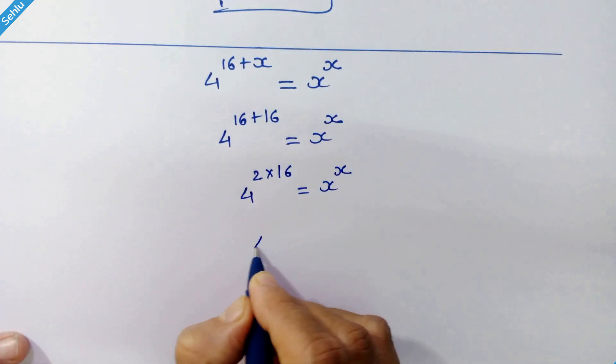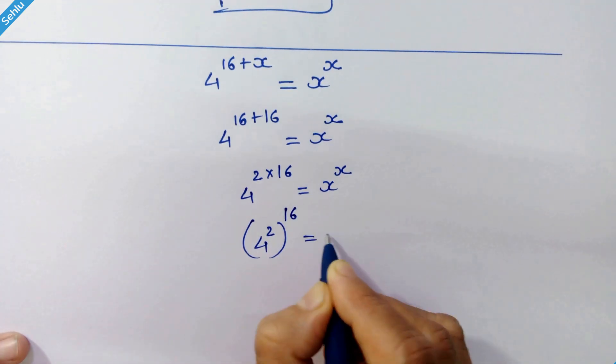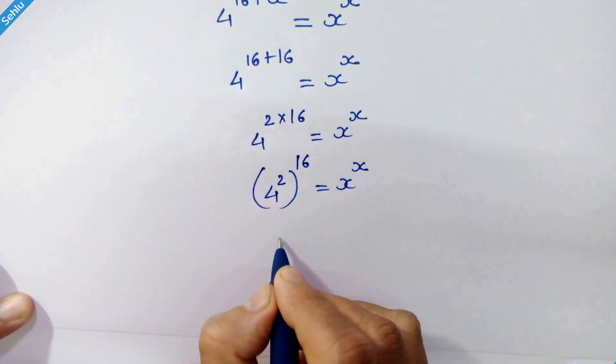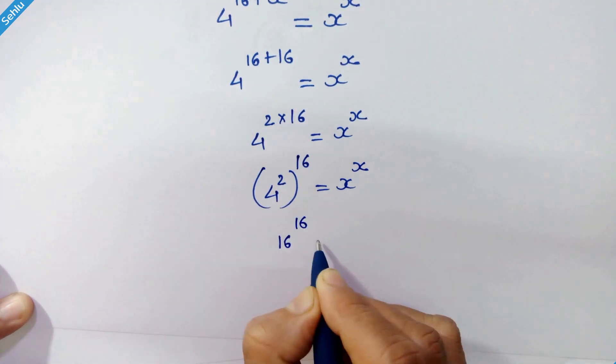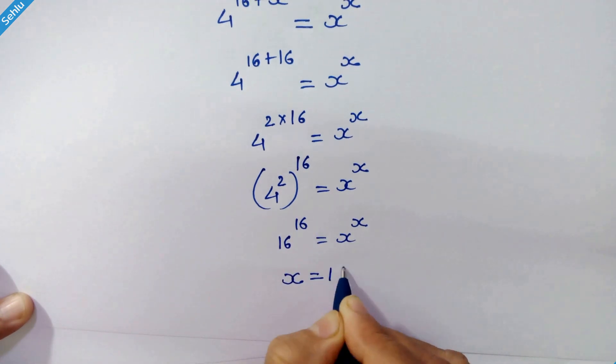We can also write this as 4 squared raised to 16 equals x raised to x. Since 4 squared is 16, we have 16 raised to 16 on both sides. The base and exponent are the same, confirming x equals 16 is the correct answer.